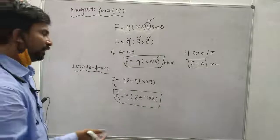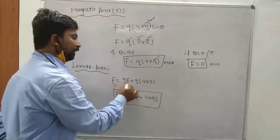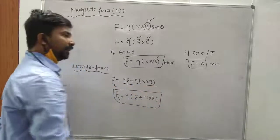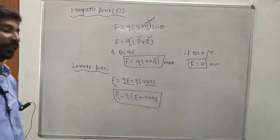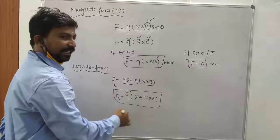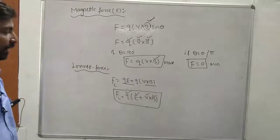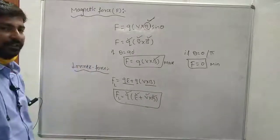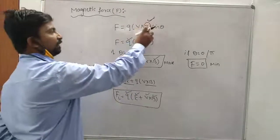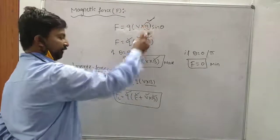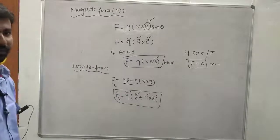The Lorentz force depends upon charge, electric field, velocity, and magnetic field. The key difference: magnetic force involves only magnetic field, whereas Lorentz force involves both electric and magnetic field. This is the concept of magnetic force and Lorentz force.